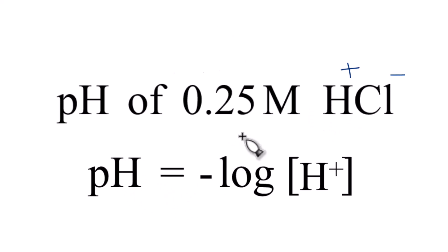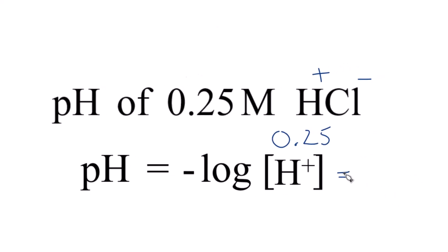So we take the negative log of 0.25, and when we do that, we get 0.6.